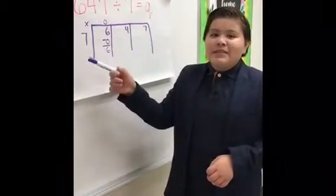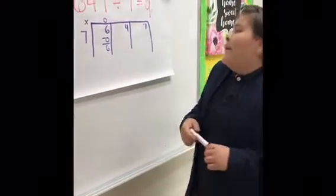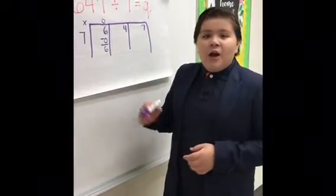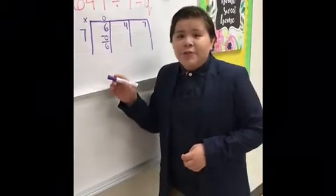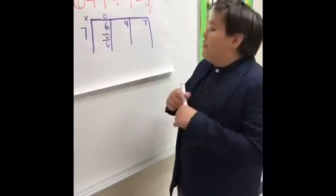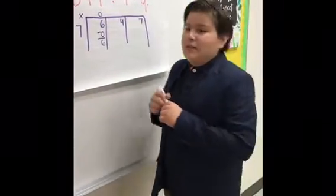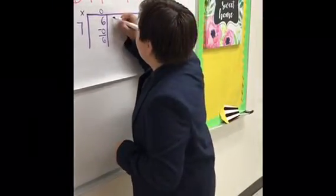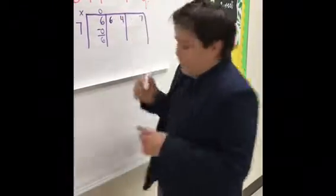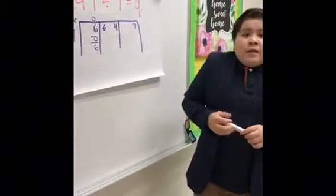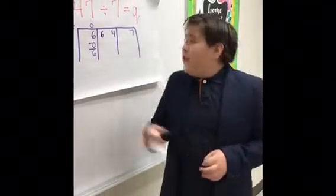0 times 7 is 0. Put the zero under the 6 and subtract. The 6 moves to the following box. Our new number is 64.